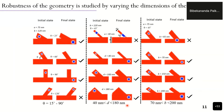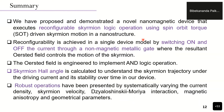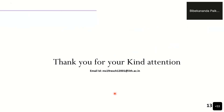In summary, a novel nanomagnetic device was proposed and demonstrated that executes reconfigurable skyrmion logic operation using spin-orbit torque driven skyrmion motion in a nanostructure. Reconfigurability is achieved in a single device model by switching on and off the current through the non-magnetic metallic gate, where the resultant Oersted field controls the skyrmion motion. The Oersted field is engineered to implement AND logic operation. The skyrmion Hall angle was estimated to understand trajectory, driving current, and stability over time. Robust operation was demonstrated by varying geometrical and material parameters.